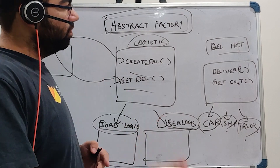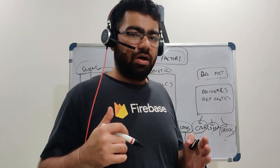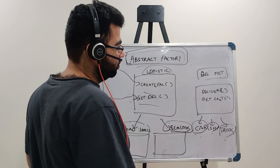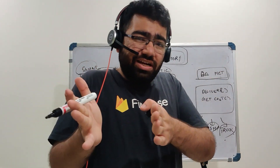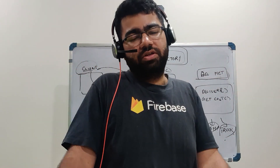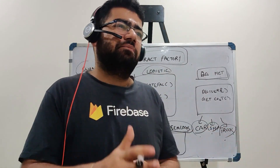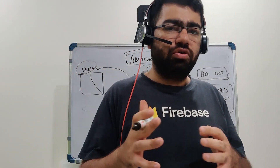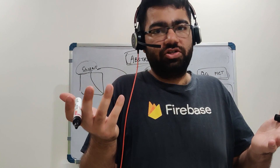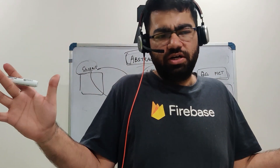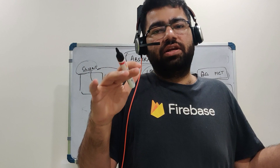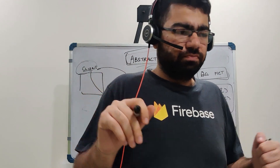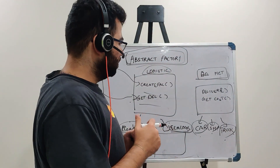Now what will we change for the abstract factory method? The major change is that instead of just the delivery method, we now want an associated object with it as well. A need came to create another related kind of object — not just one object, but a related object alongside it.